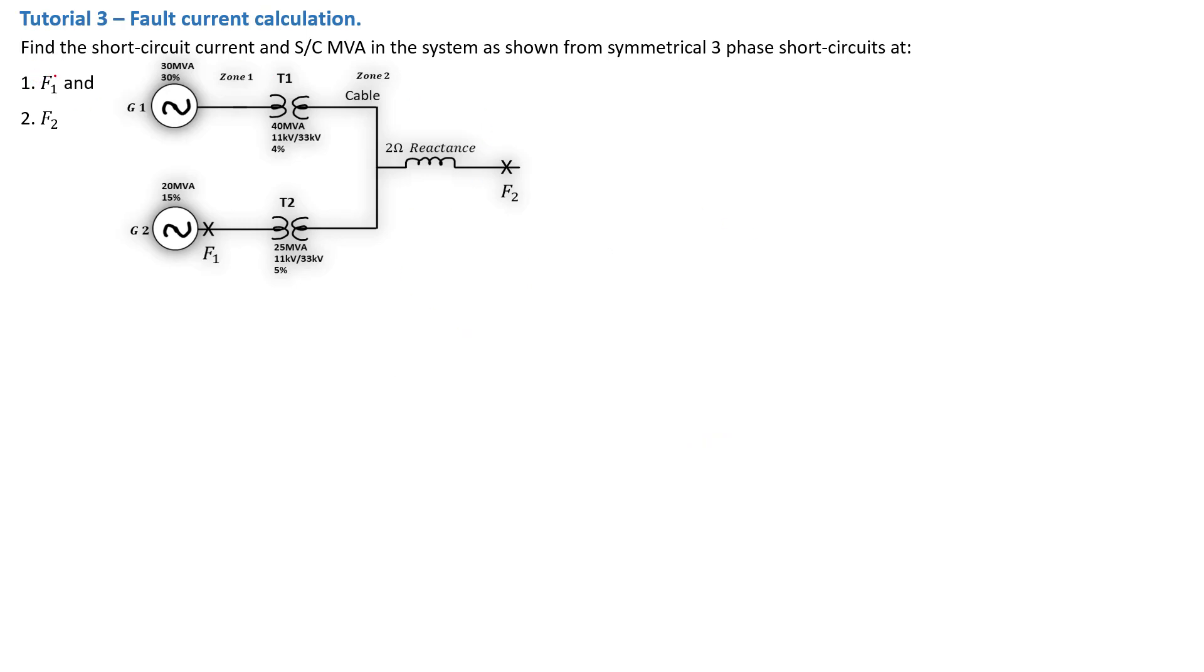Without further delay, let's dive into this tutorial. Now in this tutorial, we are told to find the short circuit current and SC MVA. MVA stands for mega volt ampere, which is the apparent power in the system as shown from a symmetrical three-phase short circuit at F1 and F2. As we can see, we have a fault here, that's F1 and that's F2.